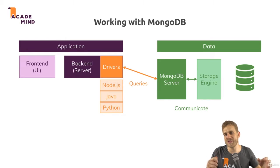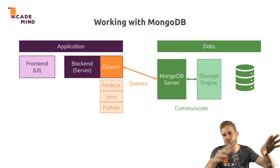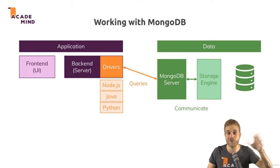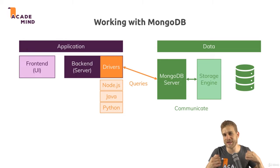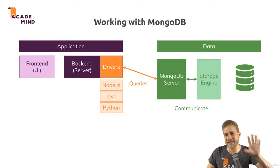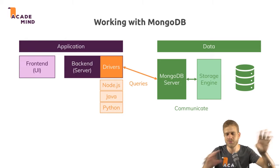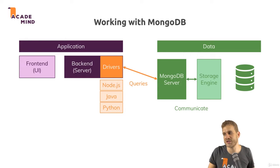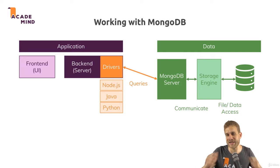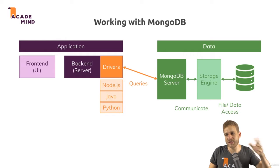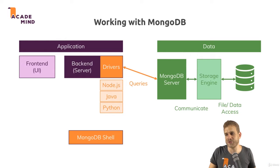The MongoDB server basically gets the query from your driver or from your shell, then knows it wants to insert something, and forwards that information — after doing some other things — to the storage engine. The storage engine then stores it in files in the end. Instead of the drivers, you can of course also use the Mongo shell, where you can write all the queries.